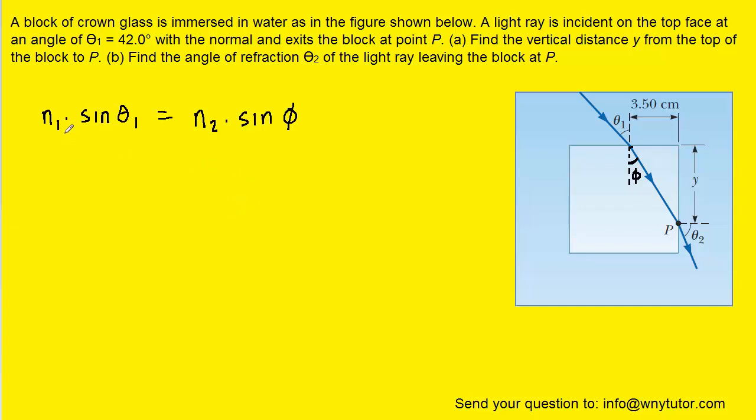Now in this Snell's Law setup, we have n1 times the sine of theta 1. Theta 1 is marked in the diagram and is told to us in the question to have a value of 42 degrees.